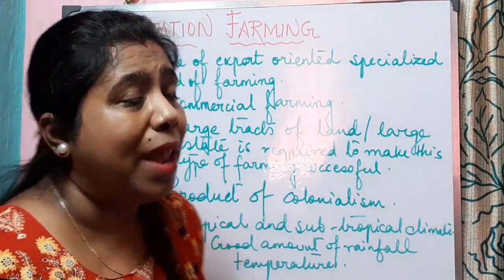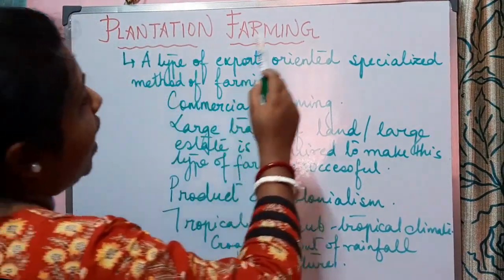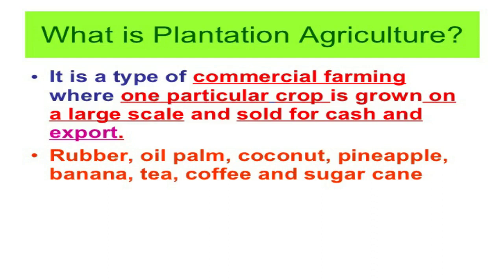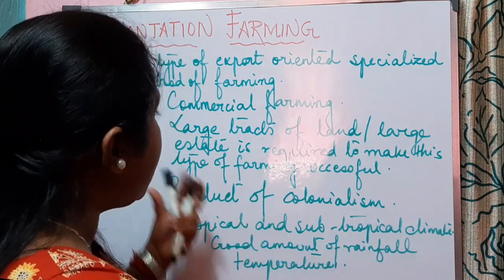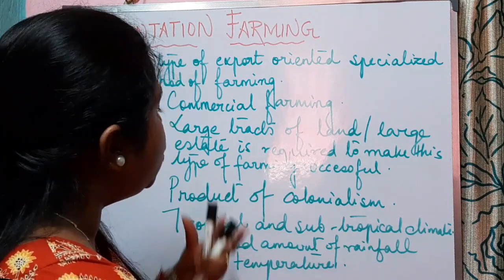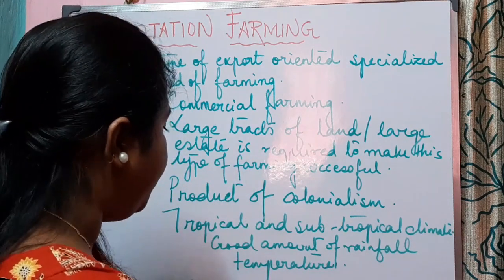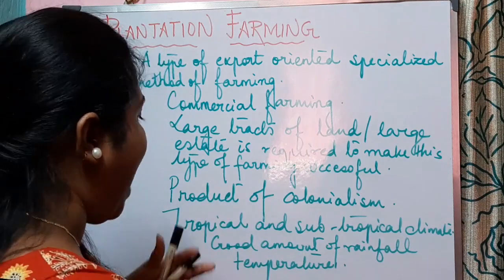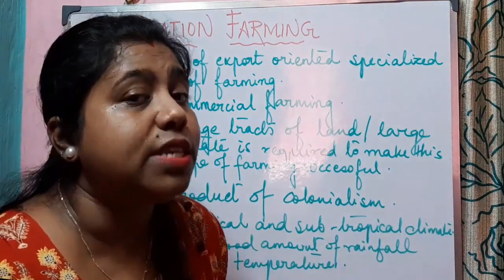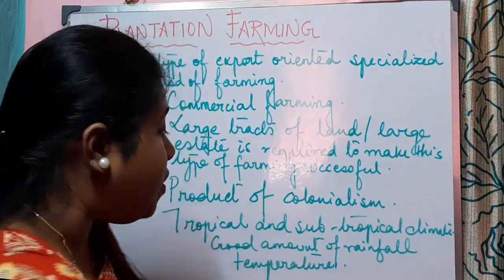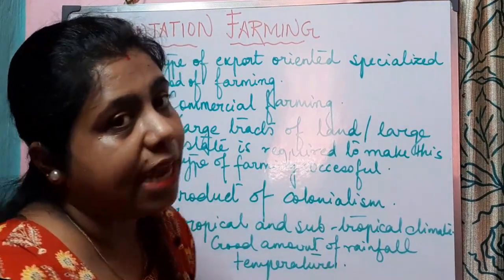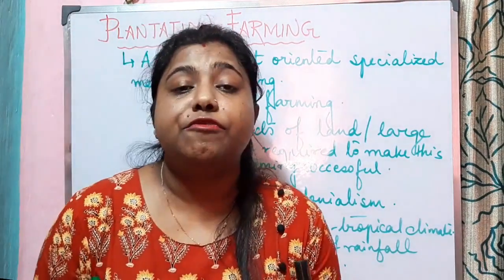So what is plantation farming? It is a type of export-oriented, specialized method of farming, which is a type of commercial farming where we need large tracts of land and a large estate to make it successful. It is a product of colonialism and is mainly practiced in areas with a tropical and subtropical climate. Now let us know the features of plantation farming.